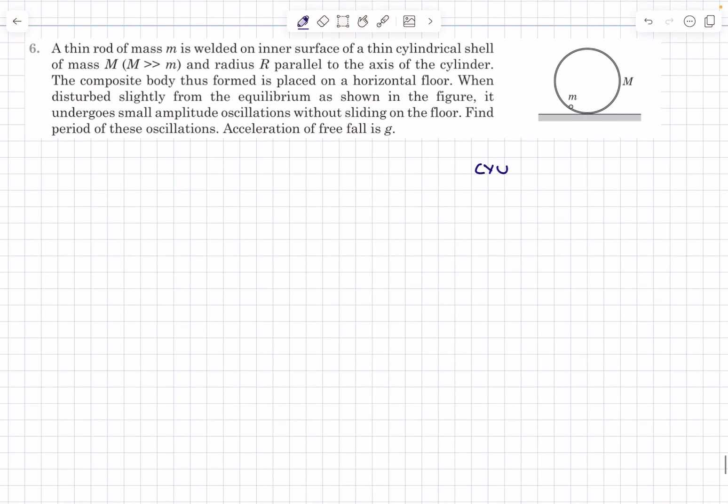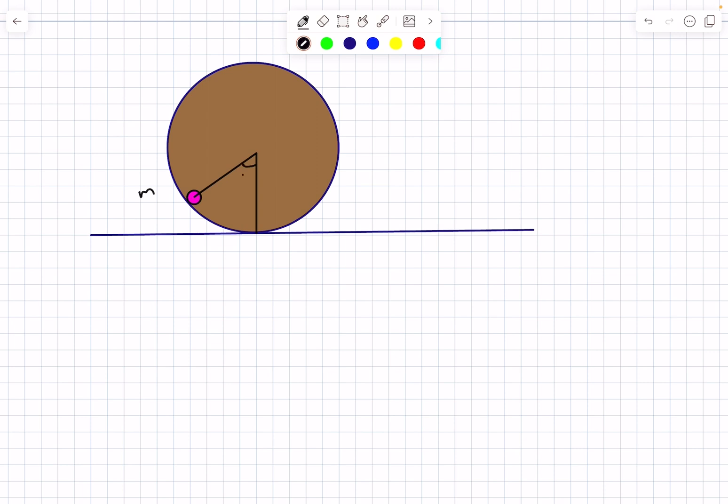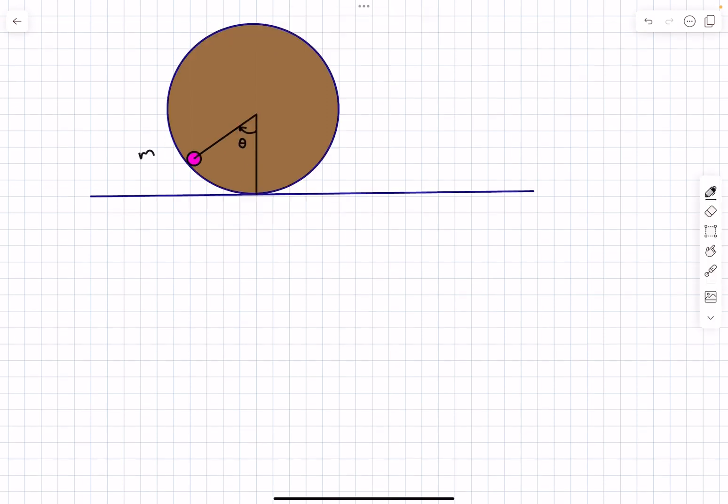Let's get into the problem. Let's say the angular position of our mass m is theta with the vertical. As we consider theta in the clockwise direction, we'll consider the angular acceleration of the composite body also to be in the clockwise direction.